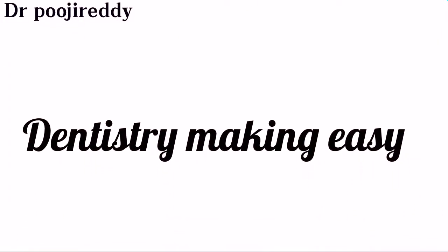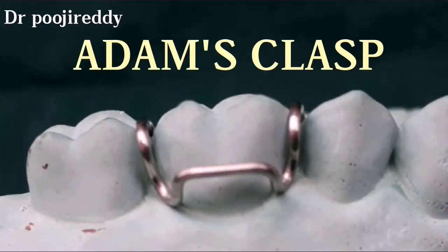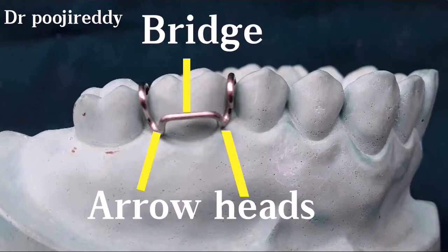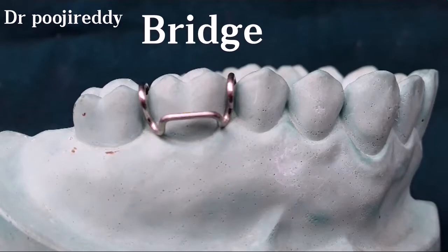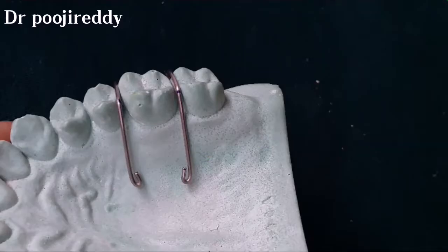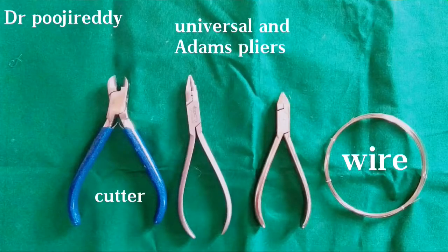Today I'm going to share a new video on how to fabricate an Adams clasp, which is concerned to the orthodontic department in dentistry. This is how the Adams clasp looked like after fabrication. Usually Adams clasp has two arrowheads, one bridge, and two retentive arms as you are seeing right now. This is a diagram of the Adams clasp or retentive arm, and these are some of the instruments used for the fabrication of Adams clasp.